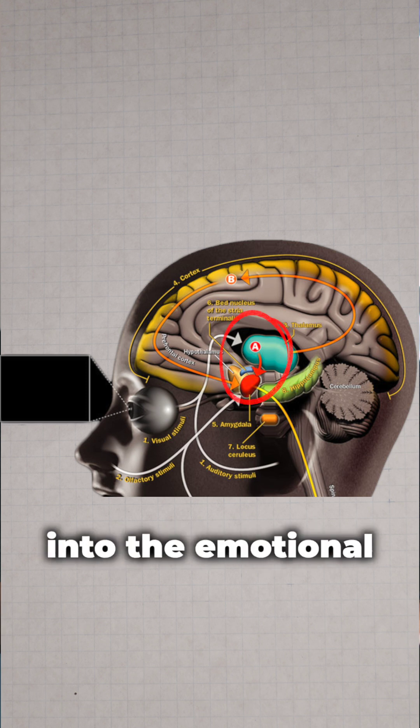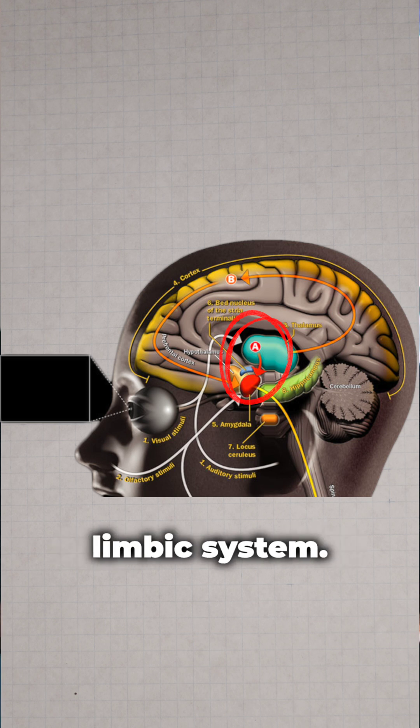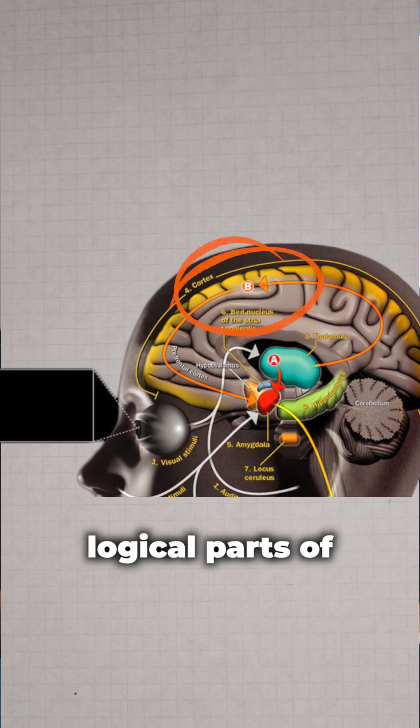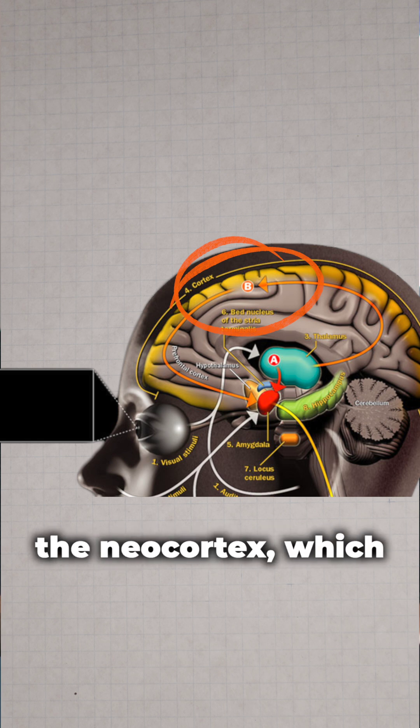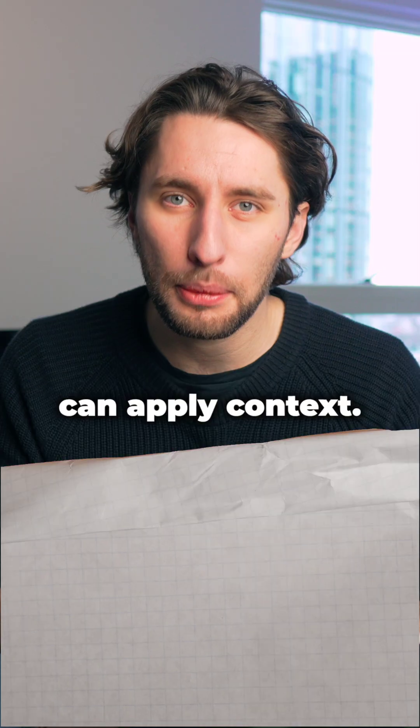The shortcut goes straight into the emotional areas of the brain like the amygdala and the limbic system. Then the high road goes up into the logical parts of the brain like the neocortex, which is where we can apply context.